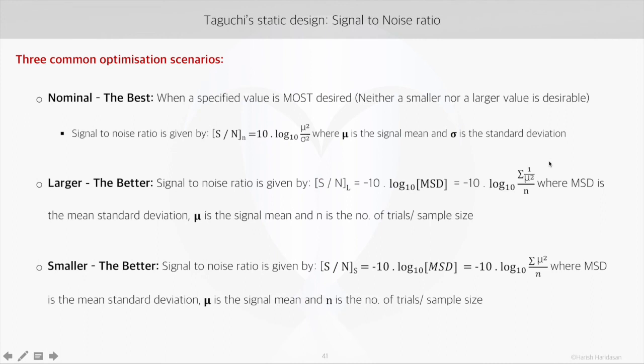Coming to the third scenario in static designs, it is a case where smaller the response, it is better for the process, like in case of cost. Since this is a reverse representation of the second scenario, the formula is similar but in place of 1/(mu square) we use mu square.